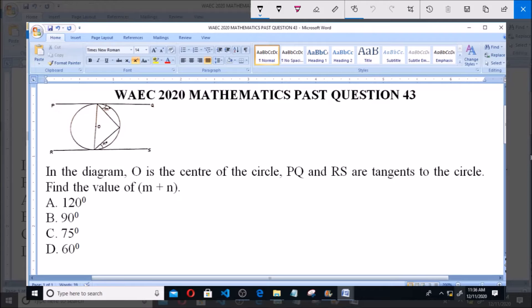These lines are tangent to the circle and O here represents the center of the circle. Now, we can see that.